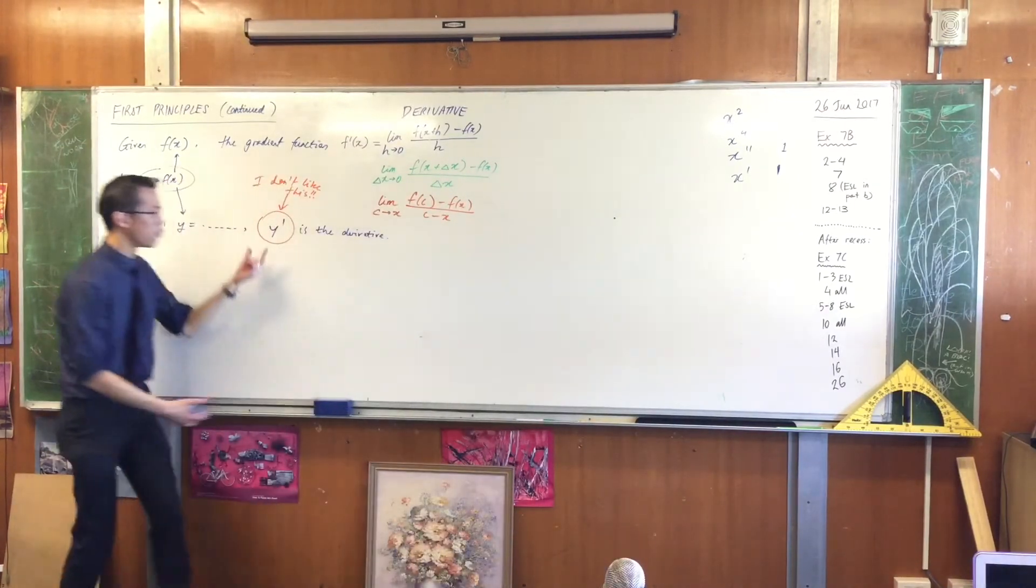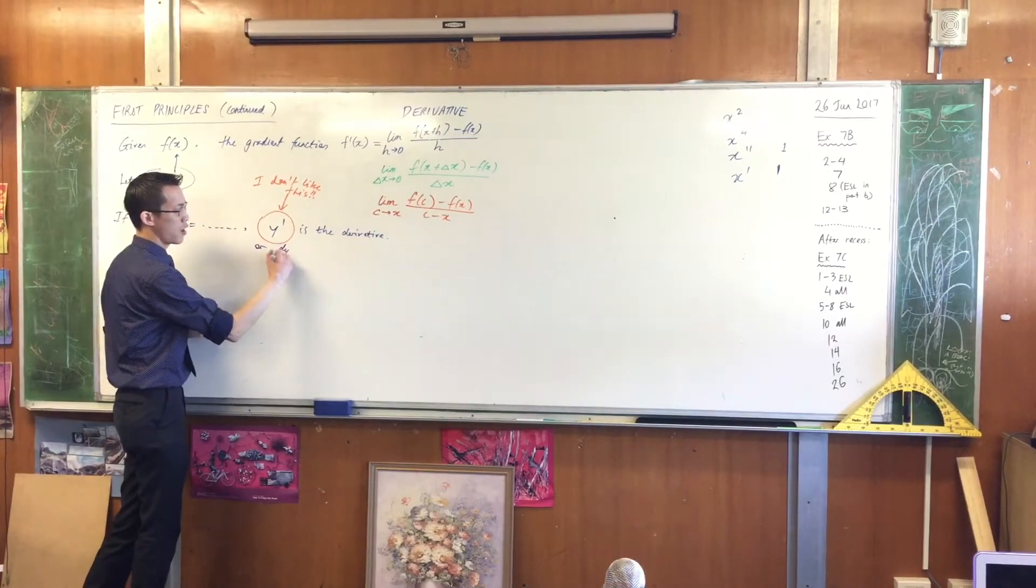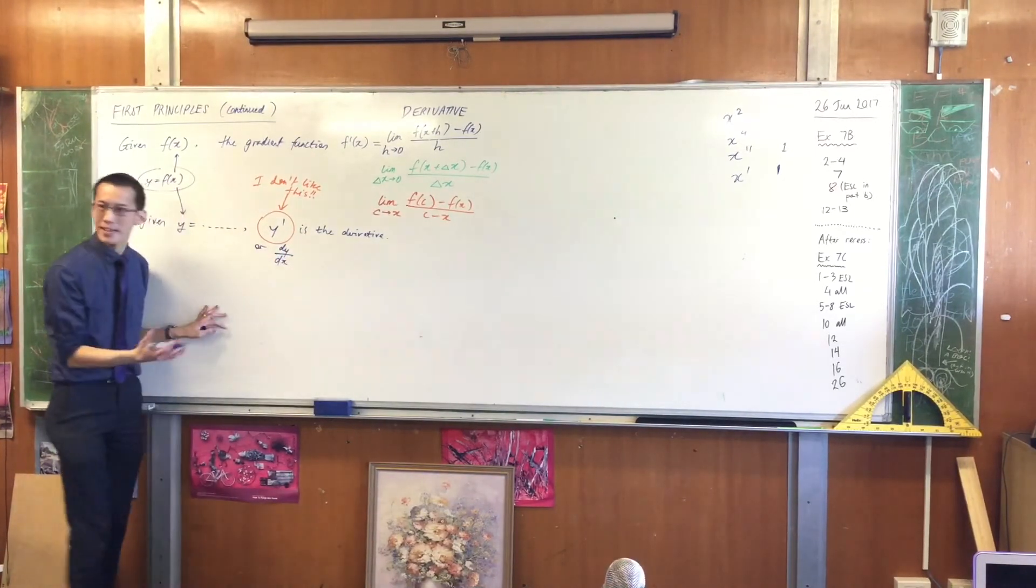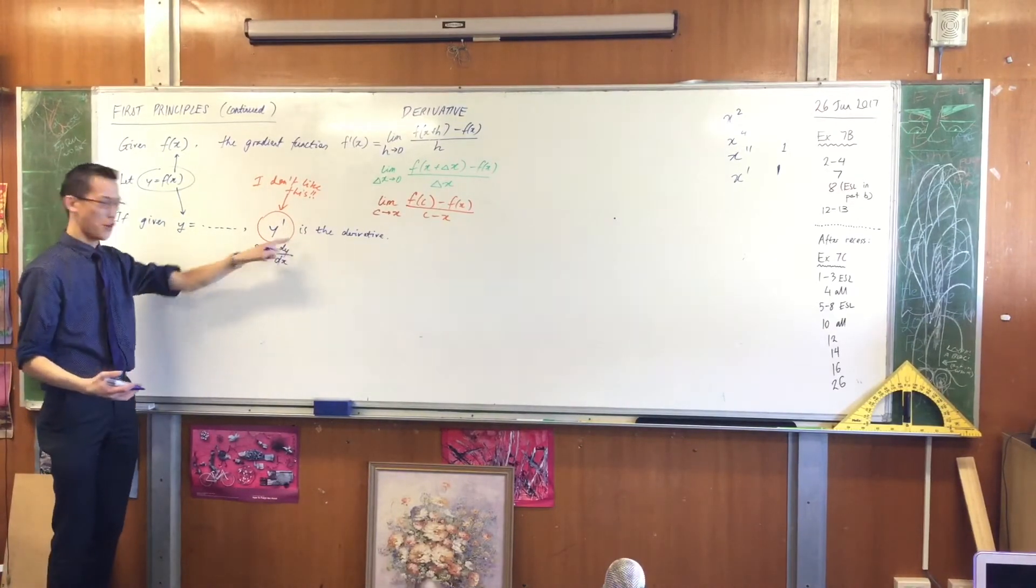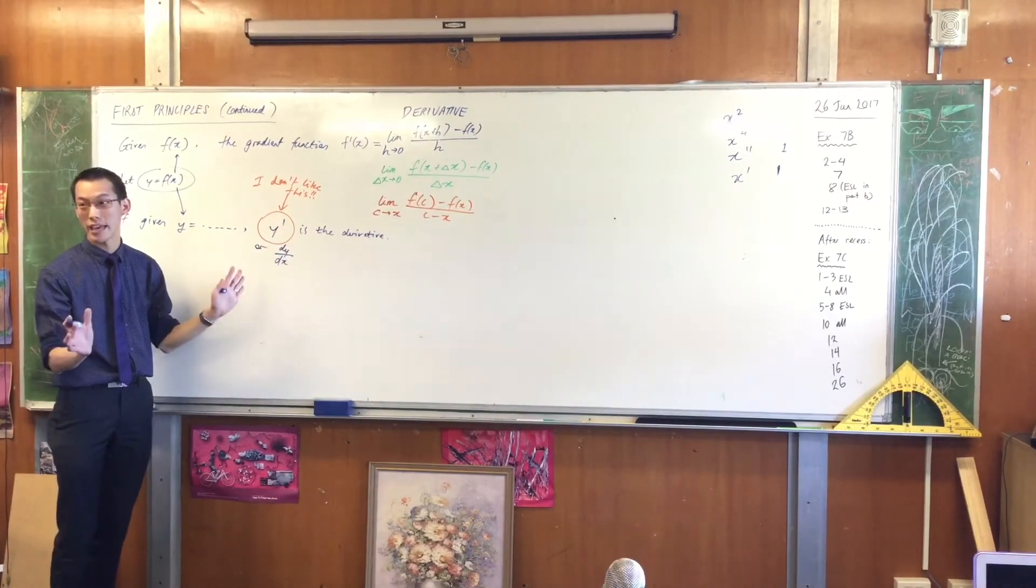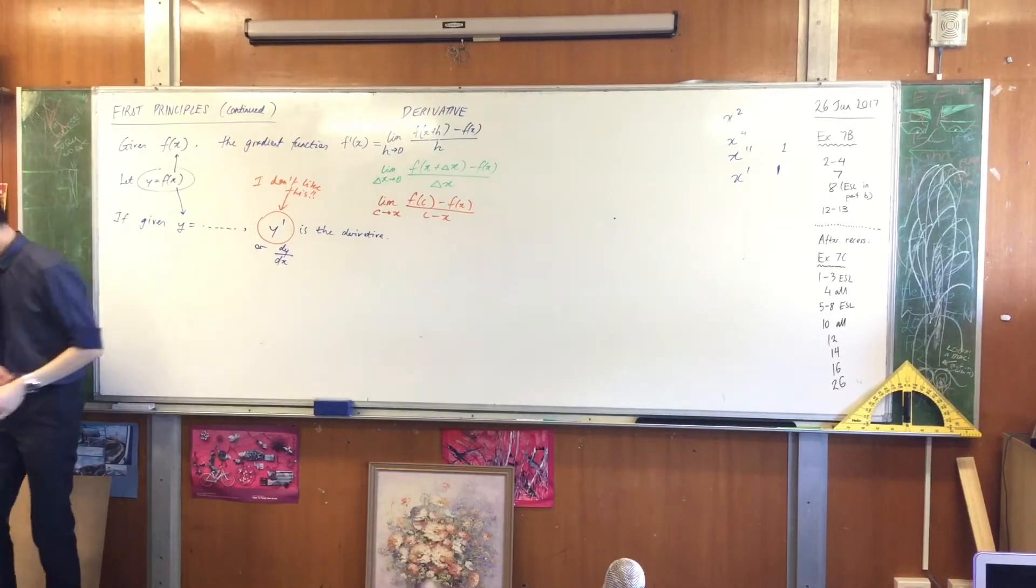If you have y's in here, I think it's far more preferable to say dy on dx. What does that mean? It means the change in y over the change in x. It's just a fancy way of saying rise over run.